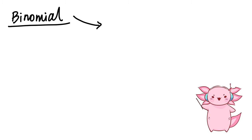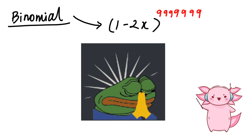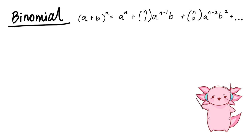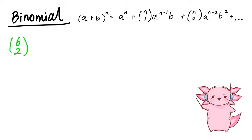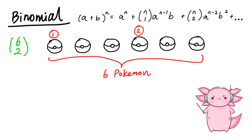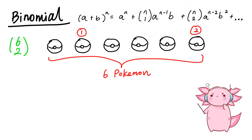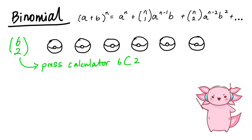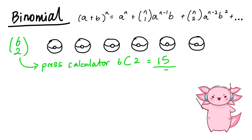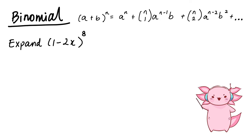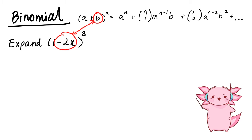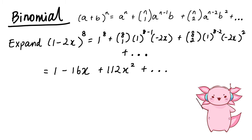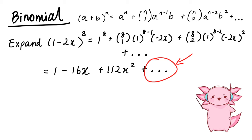Binomial is all about dealing with things like (1 − 2x) raised to some higher power. The formula looks a little crazy, but let's start with the nCr notation — for example, 6 choose 2 is like asking how many ways can I choose 2 Pokémon from a team of 6 for a double battle. There's a calculator button for this, and 6C2 gives us 15. Let's expand (1 − 2x)⁸: a = 1, b = −2x, n = 8, and we calculate the first 3 terms, then add '+ ...' for the rest.